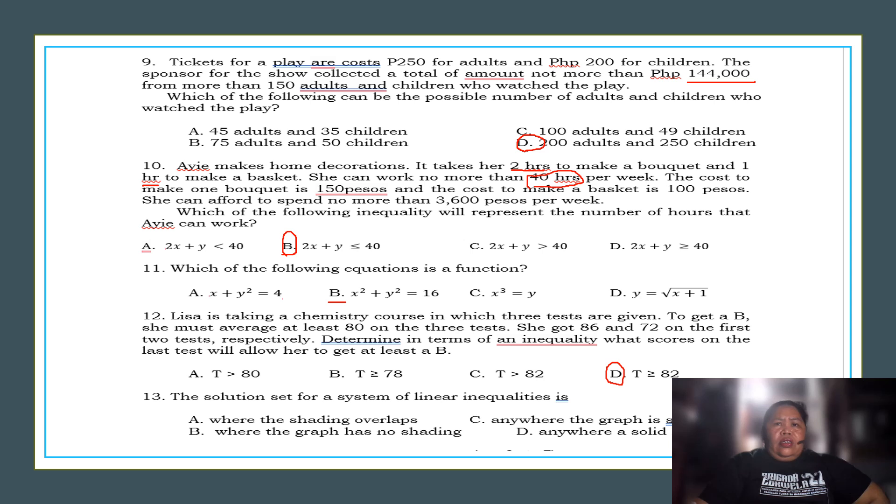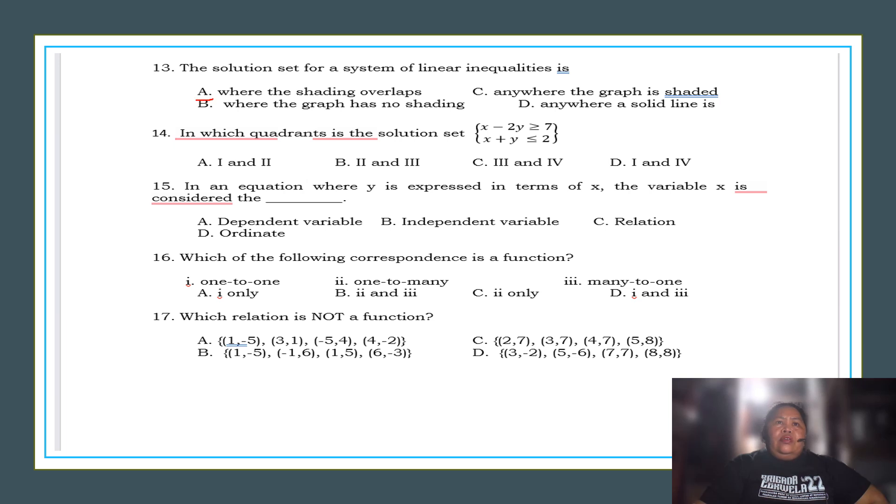Thirteen, the solution set for the system of linear equation is, since this is multiple choice, let us analyze the given choices here. Just drop those that are not necessary. Of course, we can drop this already. Anywhere in a graph, there is no graph. So, your choices now is A or B. So, the correct answer is, where the shading overlaps, of course. Since 13, we are done already here. The answer is A.